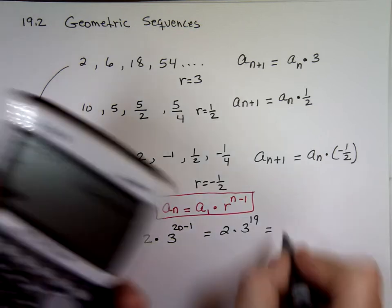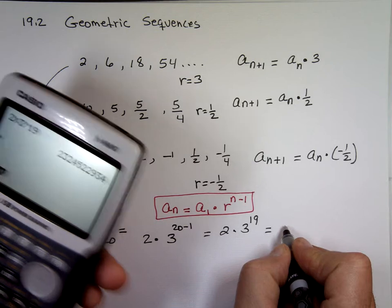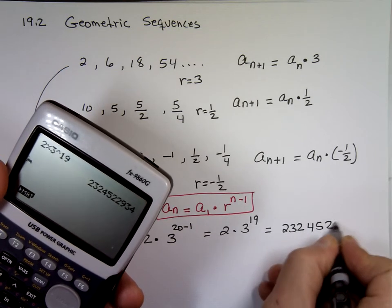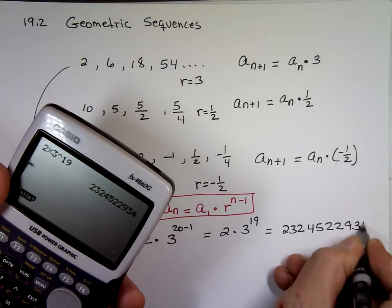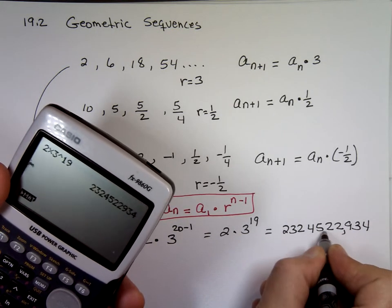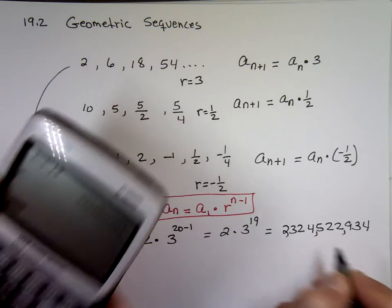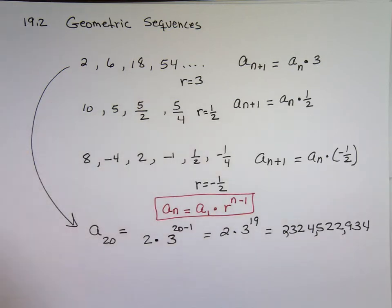Ready for that number? Two, three, two, four, five, two, two, nine, three, four. Times two. I already multiplied that. Yep. Two billion, three hundred and twenty-four million, five hundred and twenty-two thousand, nine hundred and thirty-four. Yep.